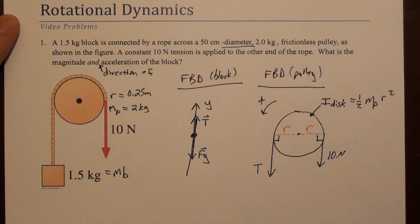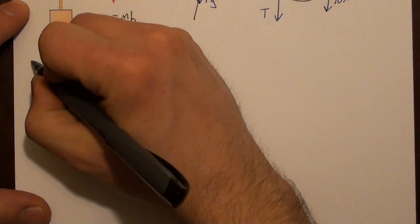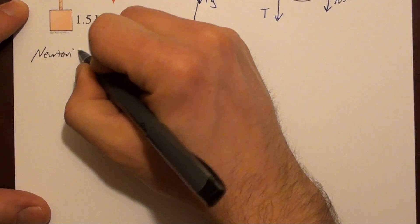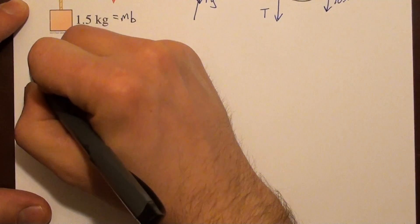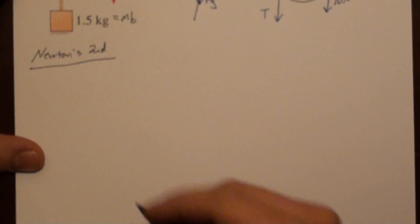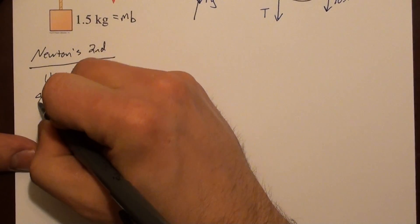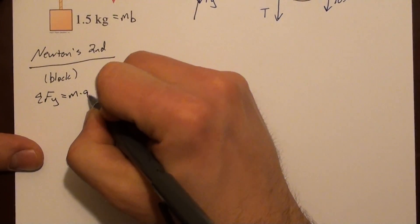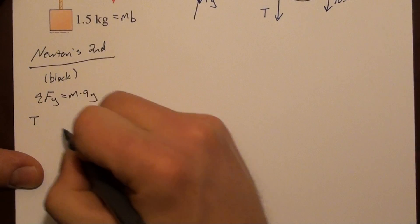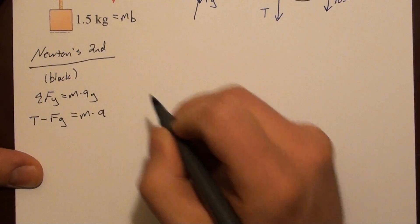So our next step is to fill out Newton's second law. So I'm going to move the free body diagrams out of the way so you can't see them, but you can back the video up and reference those if you want. So we're going to fill out Newton's second law. And we'll first start with the block. So that's pretty simple for the block. The sum of the forces in the y direction is m a y. So we have tension minus force due to gravity equals mass times the acceleration of the block.